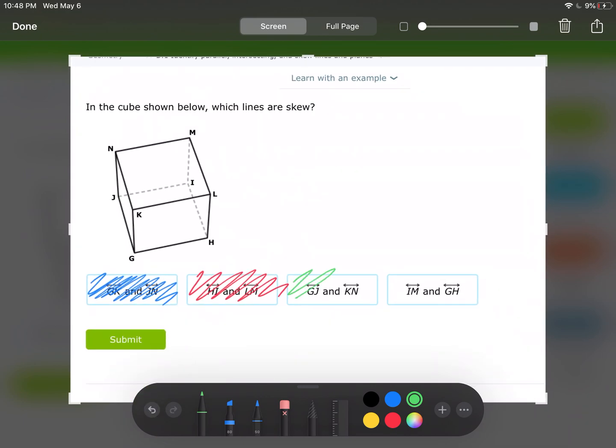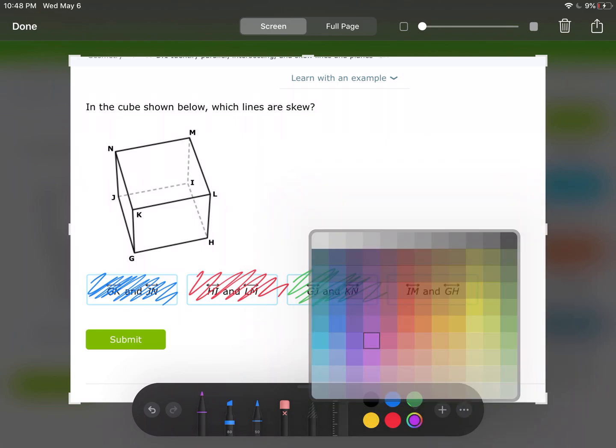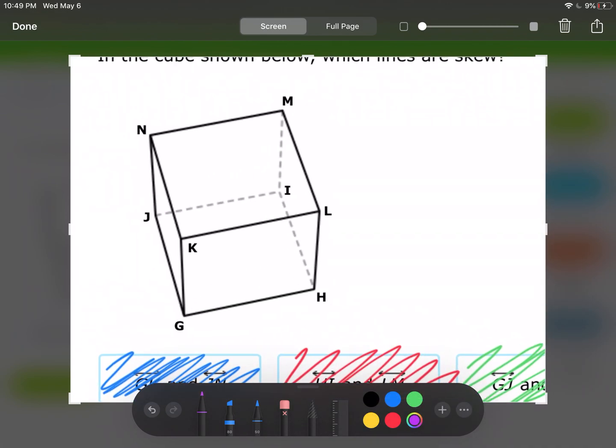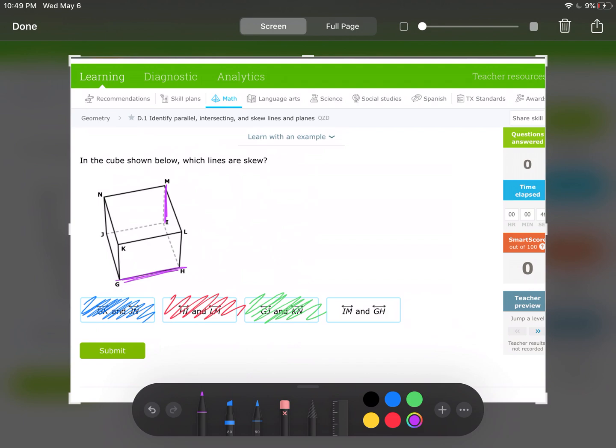So just so happens that the last one's got to be our answer. It says IM and GH. Here we go. That's a really good example of skew lines. They are not on the same face of the cube. They're not in the same plane is what I'm saying, and they're not parallel. Like they're never going to touch, but they're not in the same plane, which makes them skew instead of being parallel. So I'm going to select this last choice as my answer.